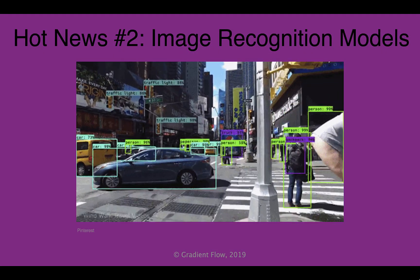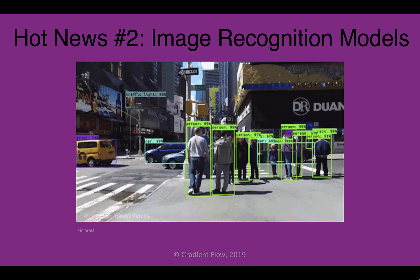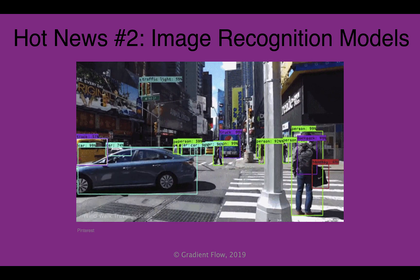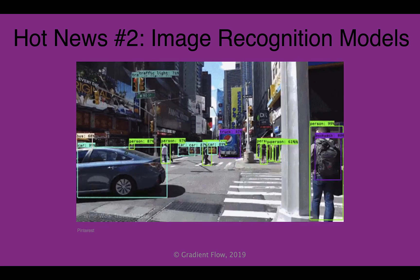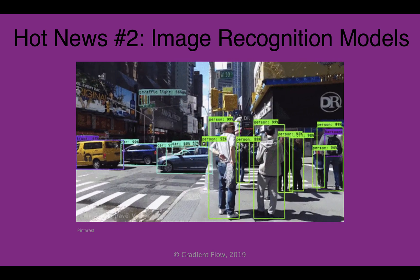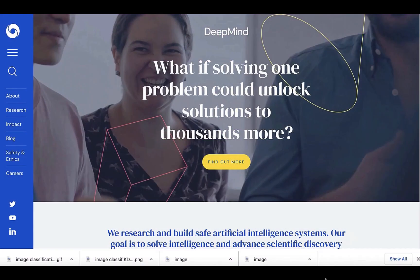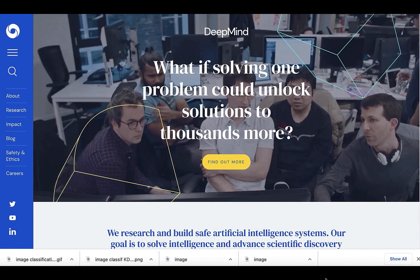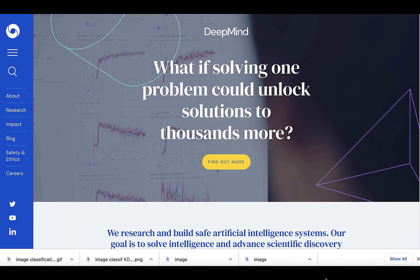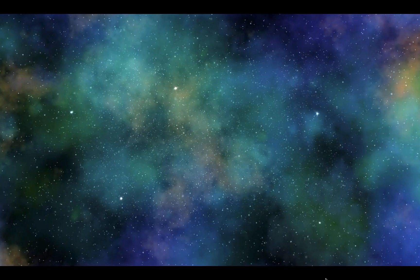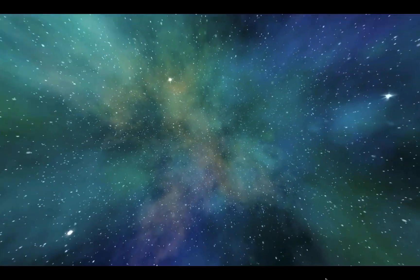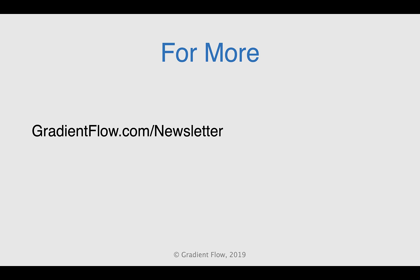Batch normalization is a key component of most image classification models, but it is limited by its dependence on batch size and interactions between samples. DeepMind's new state-of-the-art image recognition models, trained without batch normalization, are also 8.7 times faster to train. See Gradient Flow newsletter number 29 for more.